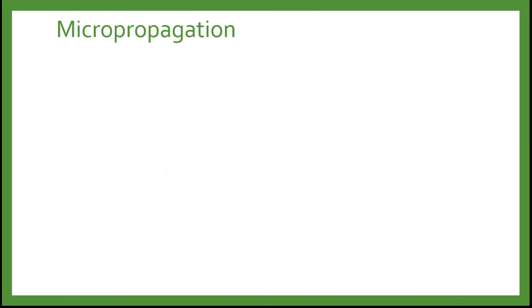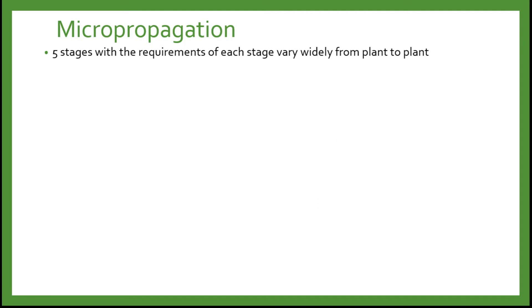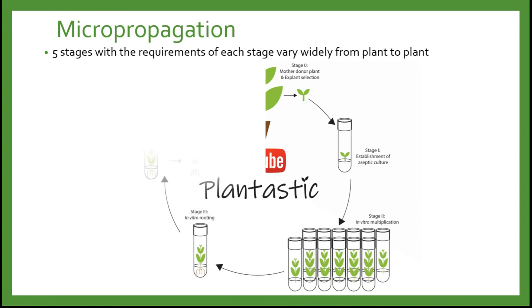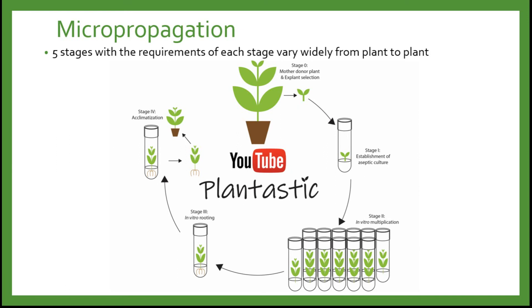Micropropagation is one of the most commonly used techniques in plant tissue culture. It involves five stages: Stage 0 — mother donor plant and explant selection; Stage 1 — establishment of aseptic culture; Stage 2 — in vitro multiplication; Stage 3 — in vitro rooting; Stage 4 — transplanting and acclimatization.